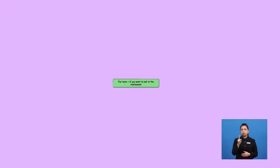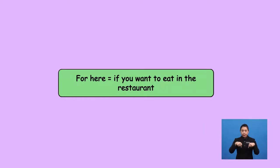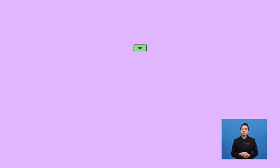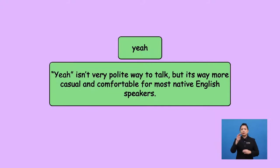It was tiring indeed. I hope we got all that my mum asked for us to get. Come, we've got to hurry back. If not, my mum will scold us both. By the way, boys and girls, if you want to eat in a restaurant, you simply say for here or for here, please. Some people say that yeah isn't a very polite way to talk, but it's way more casual and comfortable for most native English speakers. If you are in a formal restaurant or hotel, cafe, you will want to use yes. If you are in any casual dining place, it's not necessary.